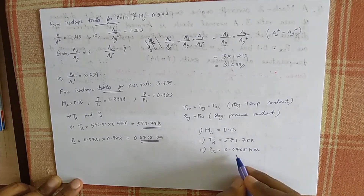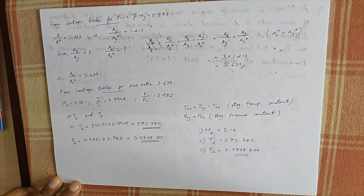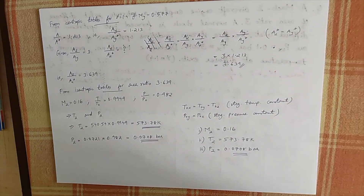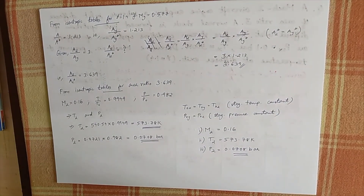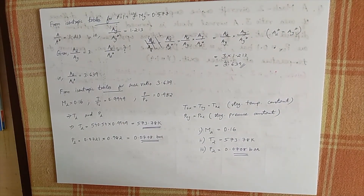To summarize, the Mach number at the diffuser exit M2 is 0.16, the exit temperature T2 is 537.78 Kelvin, and the exit pressure P2 is 0.0708 bar. With that, we come to the end of the video lectures of CFF Module 3. Thank you.